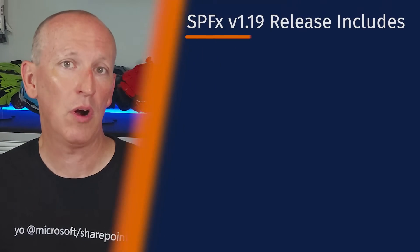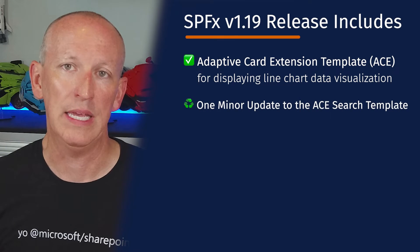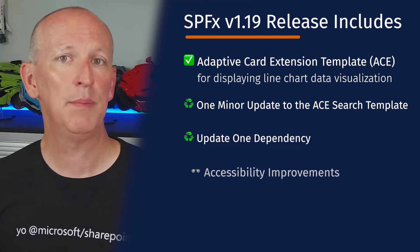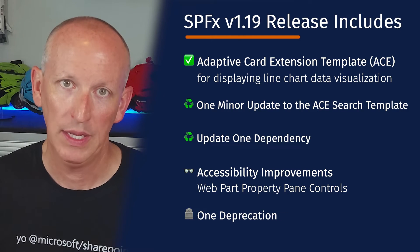Microsoft released the SharePoint Framework version 1.19 on April 30, 2024. This release features one new thing, a few updates, and one deprecation. The update included a new adaptive card extension template for displaying line chart data visualization, one minor update to the adaptive card extension search template, one dependency update, some accessibility improvements to web part property pane controls, and one deprecation. This is a relatively small release, probably in preparation for the Microsoft 365 Community Conference in early May in Orlando and the Microsoft Build Conference in Seattle later in May of 2024.